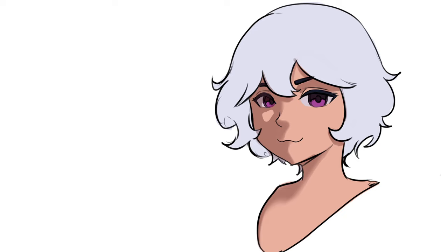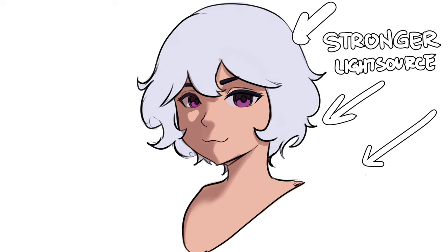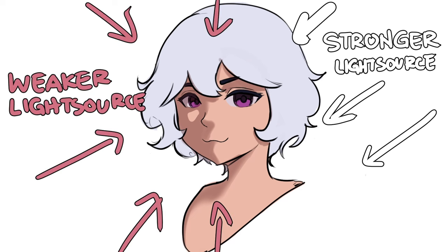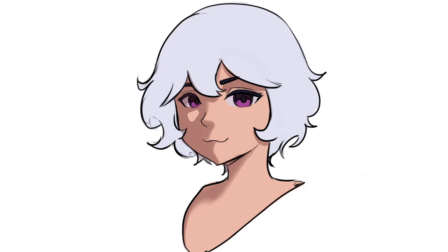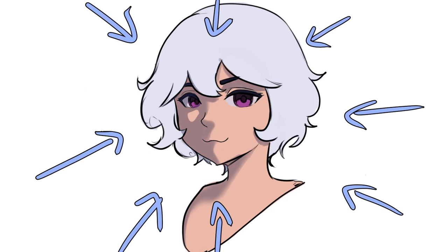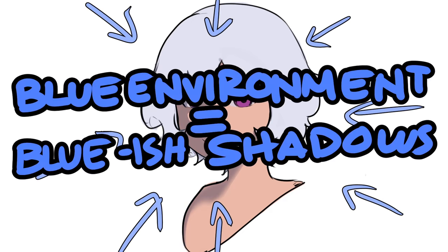Unless you're in space or in an environment with very controlled lighting, the shadow will have a different color or hue from the direct light. Instead of thinking of the shadow as a darker light, think of it as a different light source altogether. The shadow is actually the ambient light — the light being bounced around by the environment — so its hue and saturation will be influenced by whatever objects it is reflected by.